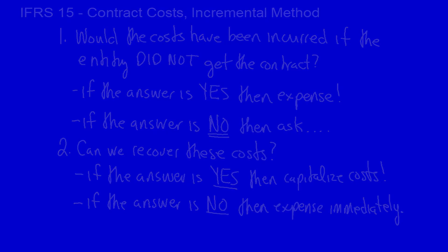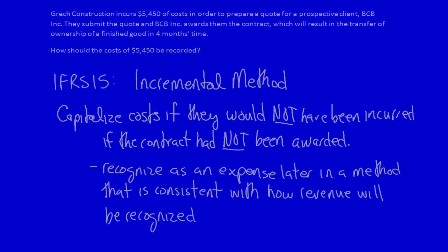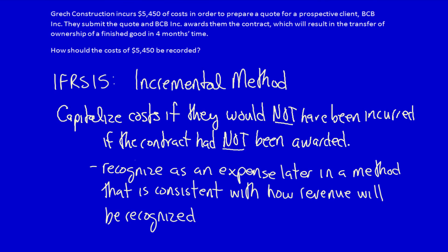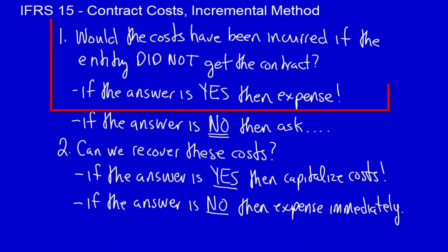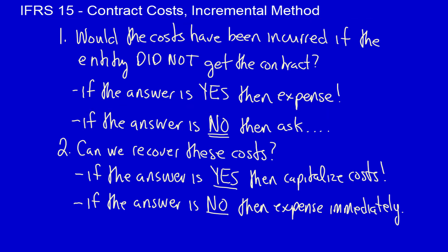So let's go back to this example. GREC Construction incurs $5,450 of costs in order to prepare a quote — we were just preparing a quote. Let's go down to the decision criteria. Would the costs have been incurred if the entity did not get the contract? The answer is yes, it would have been incurred, and therefore we have to expense immediately.